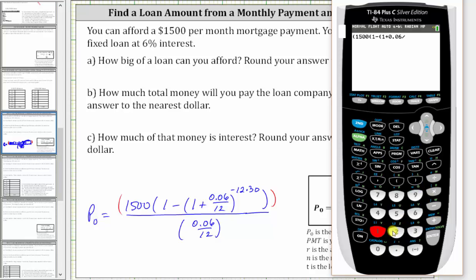close parentheses, raised to the power of negative 12 times 30. Now we press the right arrow to get out of the exponent. Then we have closed parentheses, and then closed parentheses for the numerator. And this is all divided by, in parentheses, 0.06 divided by 12.